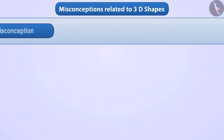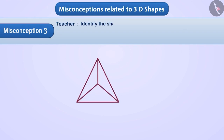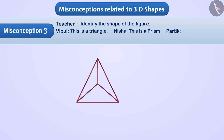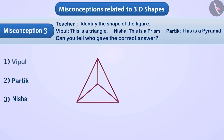Misconception 3: One day a teacher drew a figure on the blackboard and asked students to identify its shape. Vipul replied it is a triangle, Nisha replied it is a prism, and Pratik replied it is a pyramid. Can you tell who gave the correct answer? Some students get confused between a triangular pyramid and a triangle.